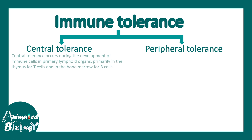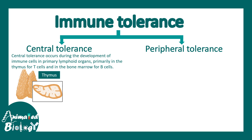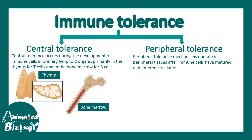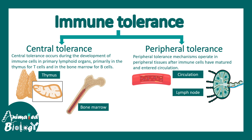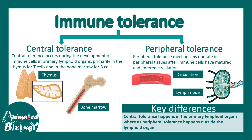There is central tolerance and peripheral tolerance. Central tolerance occurs during the development of immune cells, happening within the thymus or in the bone marrow for B-cells — that means all mechanisms occur in the primary lymphoid organs. Peripheral tolerance operates in peripheral tissues like lymph nodes or in the circulation, acting as a fail-safe mechanism when cells escape central tolerance.